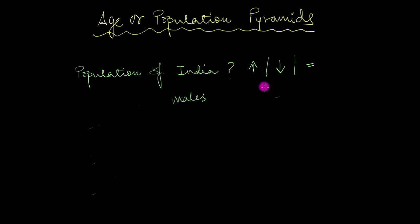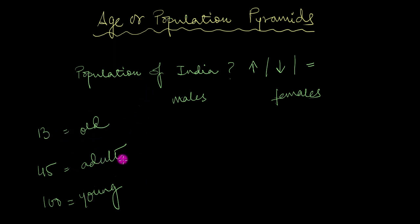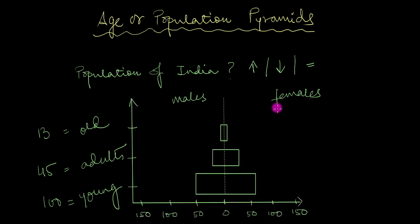Every population has males and females of different ages — some of them are young, some are old, and some are right in between. Say we pick out some random numbers: about 100 young people, 45 adults, and 13 elderly people. If you plot these numbers on a graph with age groups on the y-axis and numbers on the x-axis, you get something that looks like a pyramid. We call this an age pyramid.